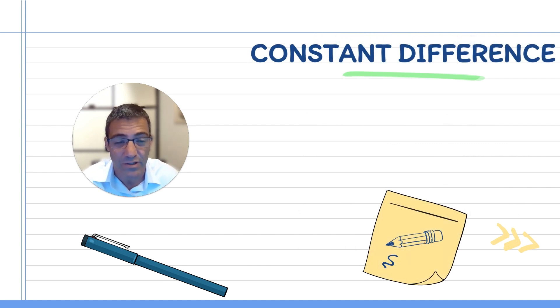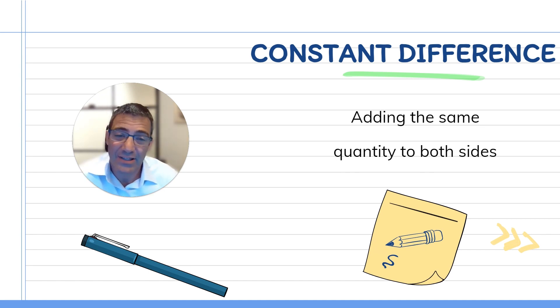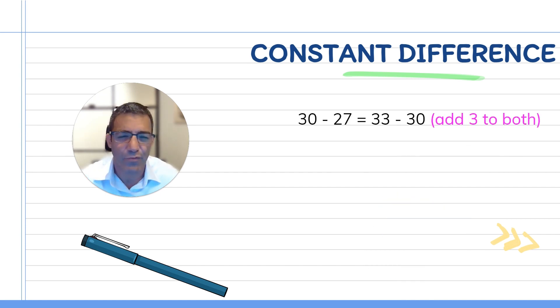And now for our last strategy of the day, let's look at the constant difference. So what is the constant difference? This is actually quite straightforward, but I don't think it's very commonly used. It's adding the same quantity to both sides. This might have a little algebra feel to it because it's something that we do in algebra relatively frequently, but we can use this for counting as well. If we look at 30 minus 27, for example, you could add three to both of these numbers and say that that difference is the same difference as between 33 and 30. If you were to add three to both of those numbers, then you get a much easier operation. So 33 minus 30 is three. And of course, that's the same result as 30 minus 27.